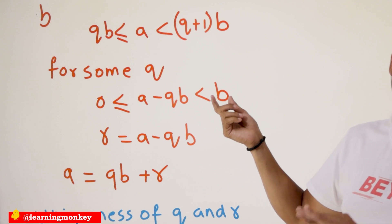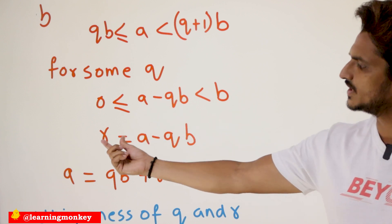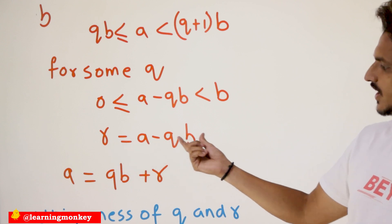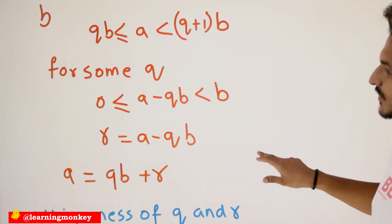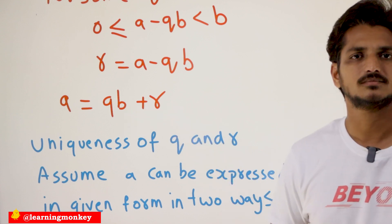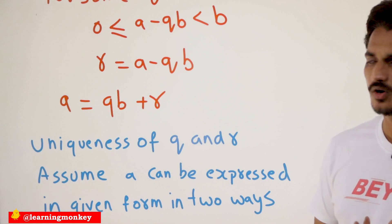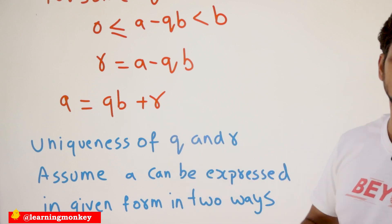It is not equal to B, less than B. So that is why A minus QB means remainder. R equals A minus QB. This can be written as A equals QB plus R.